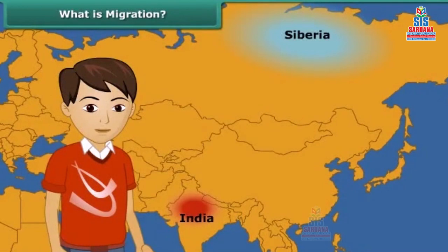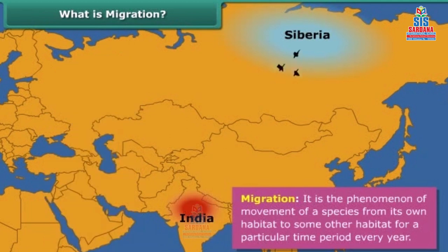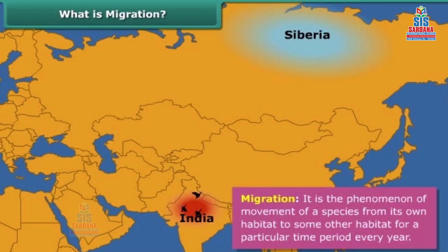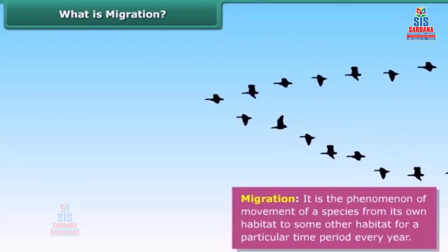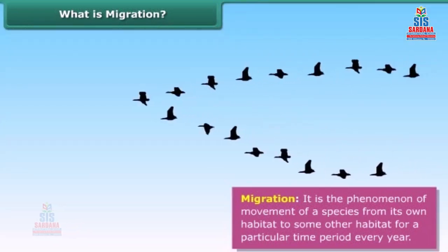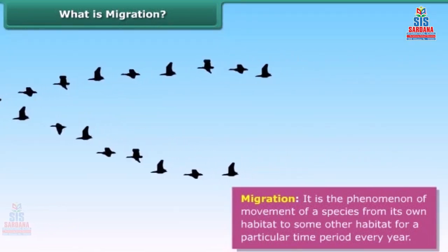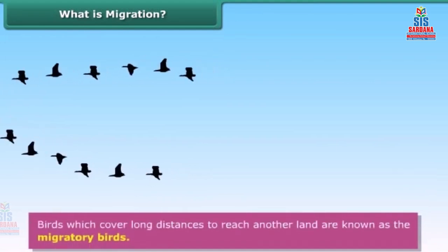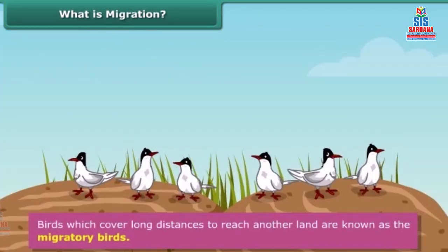Let us learn what the term migration means. Migration is the phenomenon of movement of a species from its own habitat to some other habitat for a particular time period every year, for a specific purpose like breeding or avoiding climatic conditions.